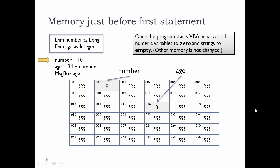So once the program starts but before you've actually executed any statements, VBA will initialize all your numeric memory locations to zero and strings get initialized to an empty string. It doesn't mess around with any of the other memory because there's no reason to.